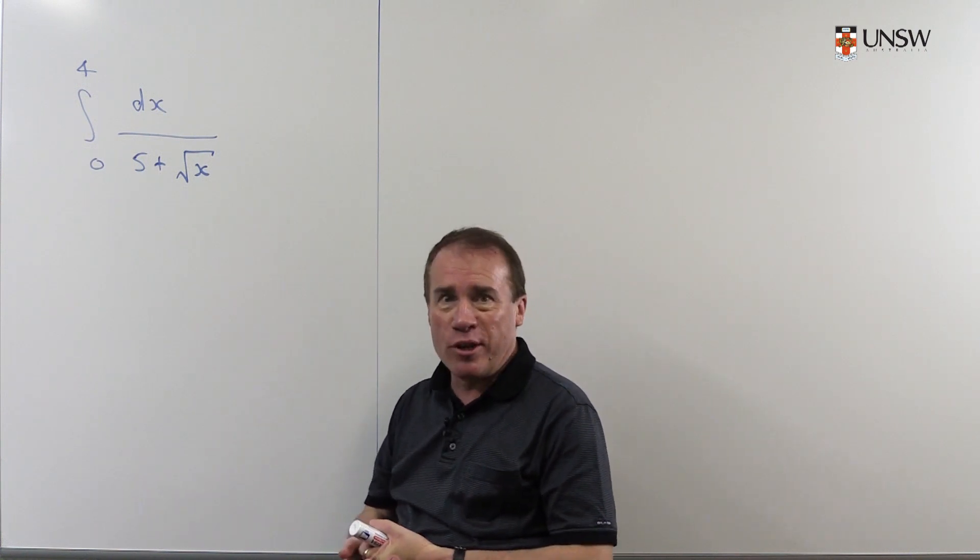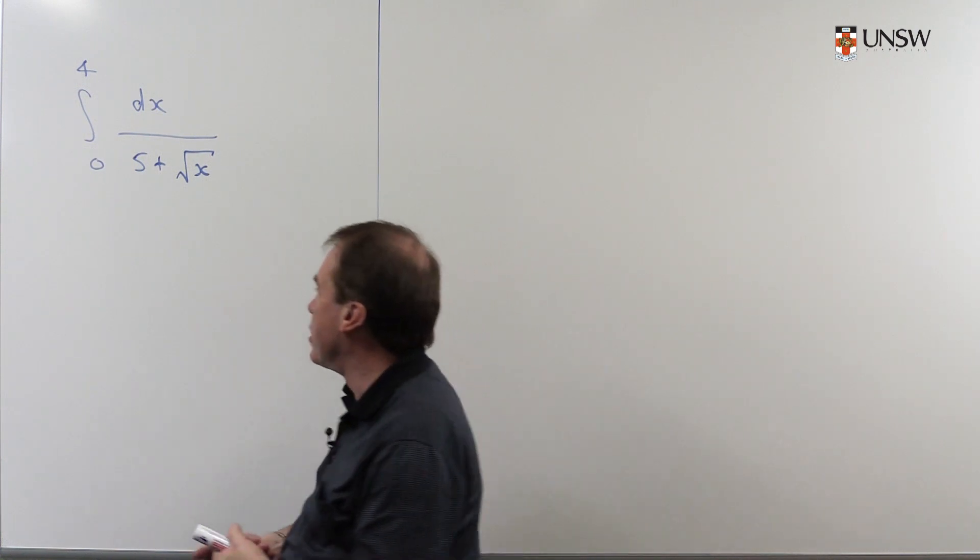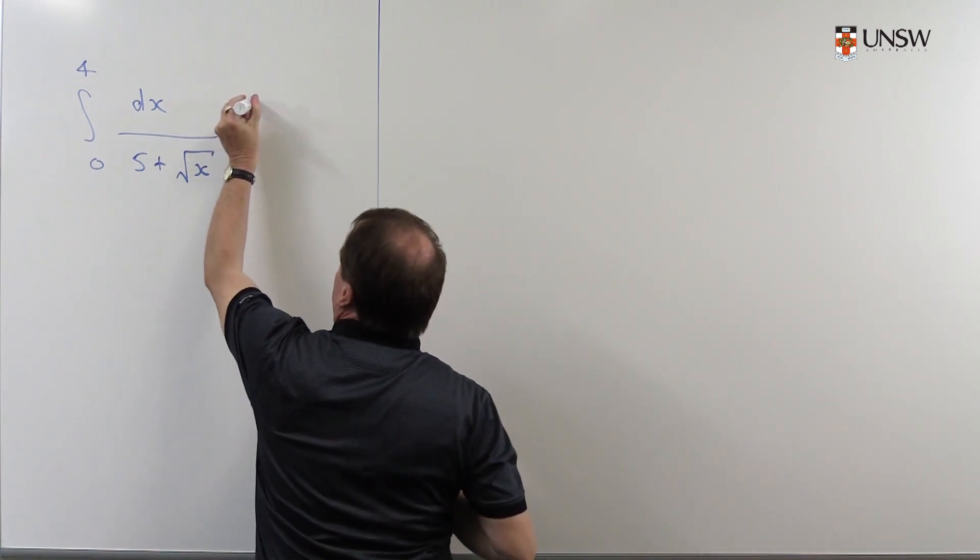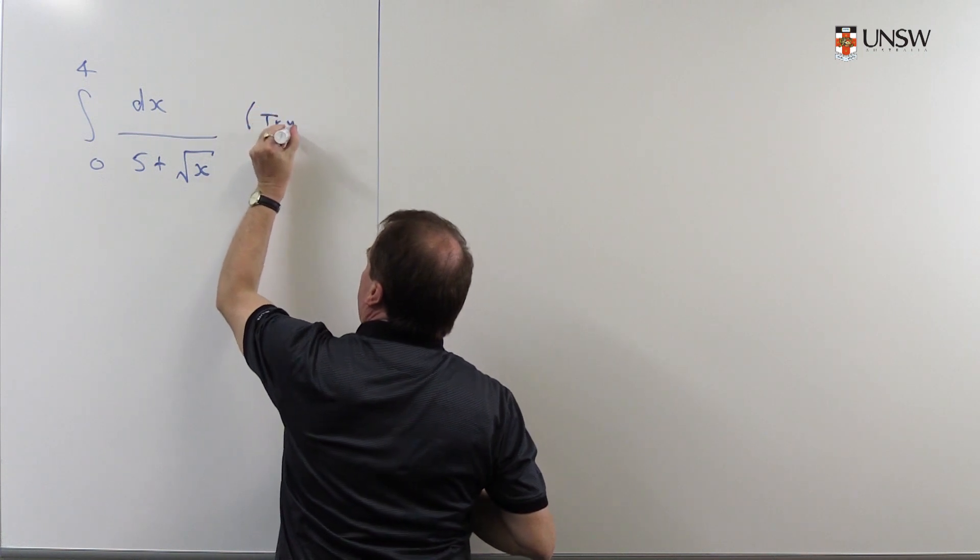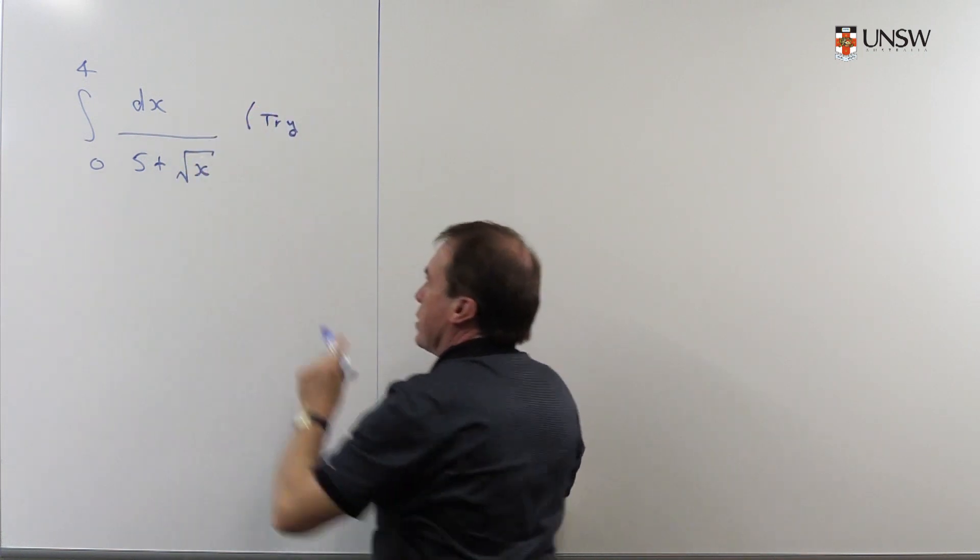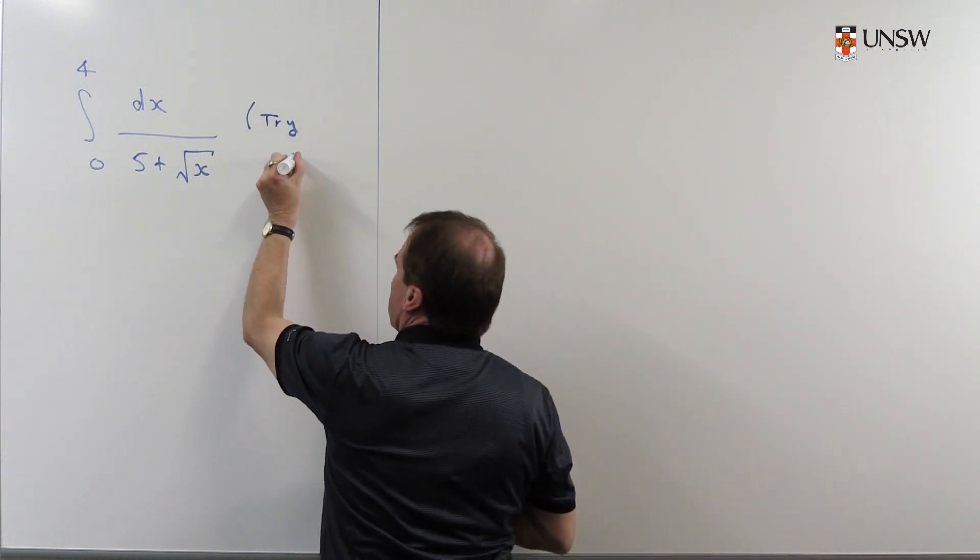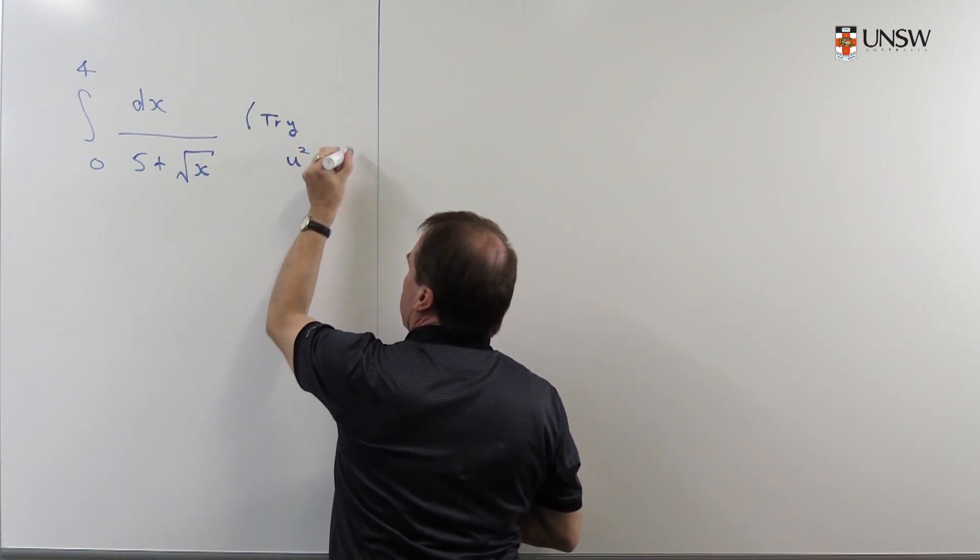Now substitutions are not unique so there's various ways you can tackle this. You might like to try, I'll just put it over the side here. You might look at this and say well I want to get rid of that square root sign so one thing you could do is to try putting u squared equals x.